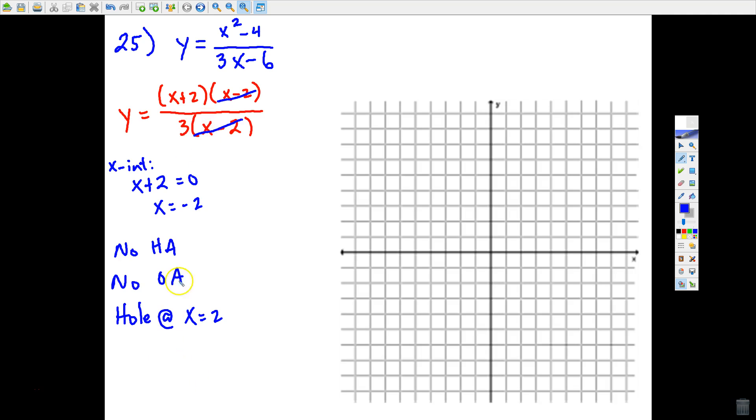And now when we go to sketch the graph, we're really just going to deal with this part of the function that remains after canceling. And this may not look too familiar to you, but what if we did divide by 3 into both of these terms in the numerator?